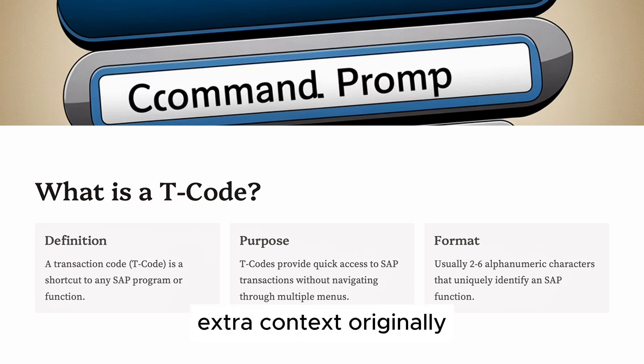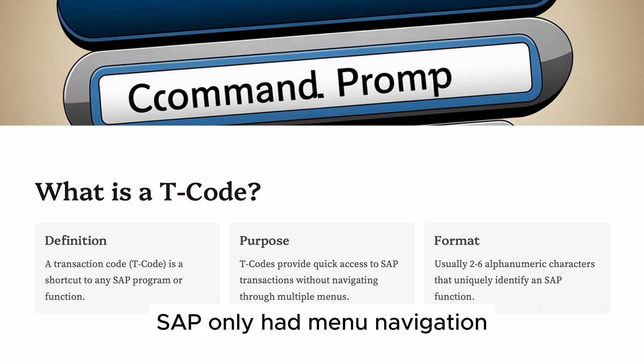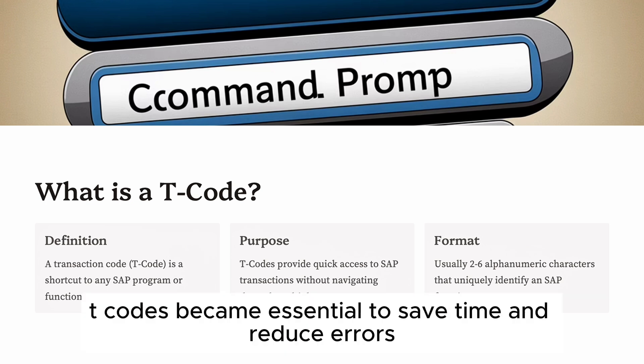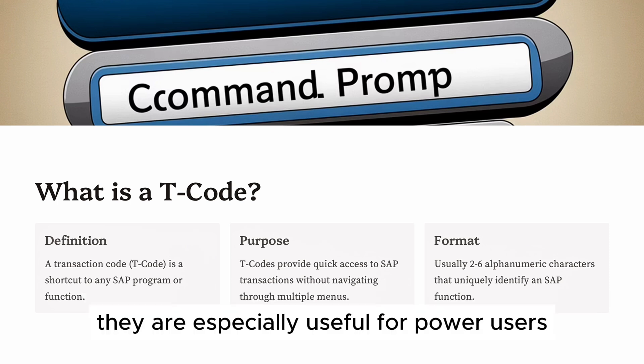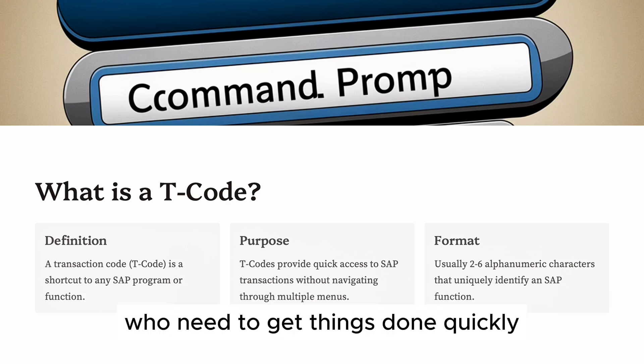Originally, SAP only had menu navigation. But as systems grew, T codes became essential to save time and reduce errors. They are especially useful for power users who need to get things done quickly.